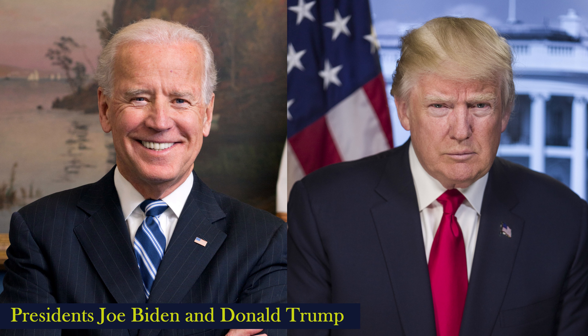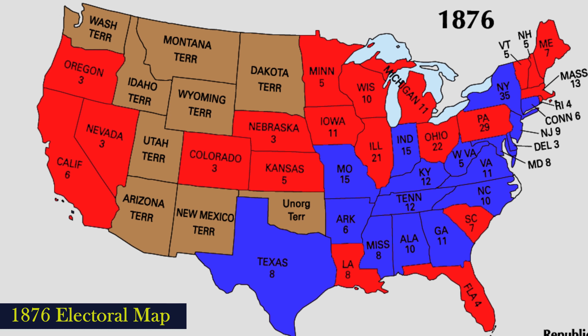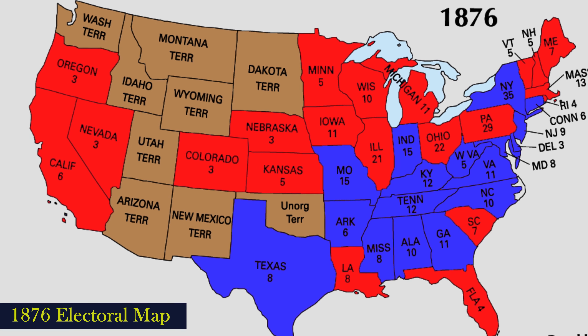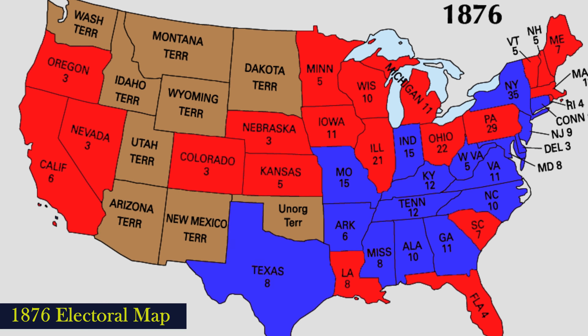A shout-out to viewer Ezekiel Motzkowski, who wanted to learn more about the election of 1876. Why is that election so interesting? Because both sides tried to manipulate the will of the people in order to get their man into office. And if that sounds familiar, wait until you hear the details. I'm Bob Summers, and this is a Presidential Story.